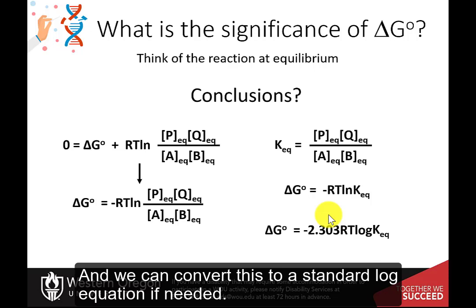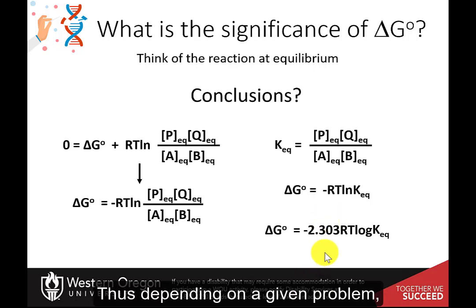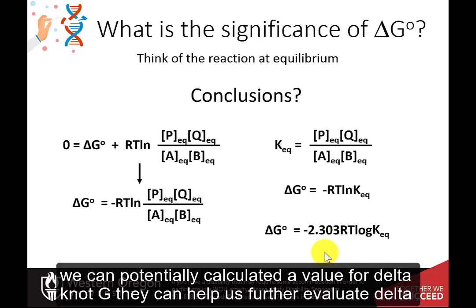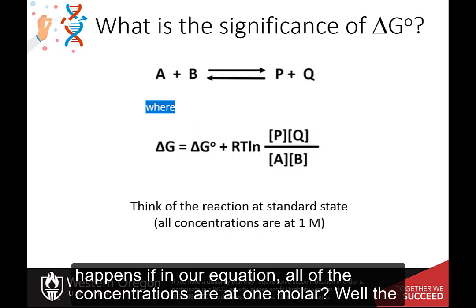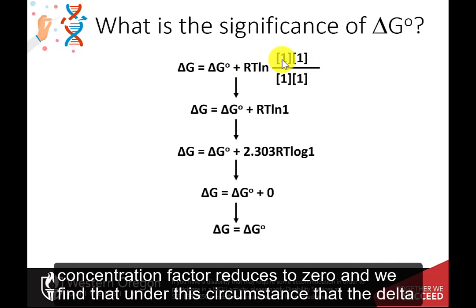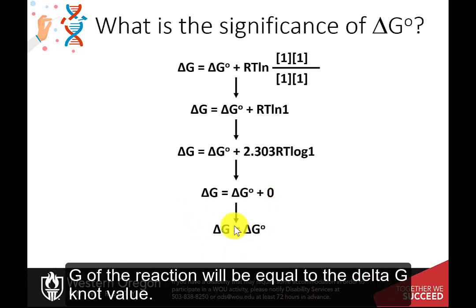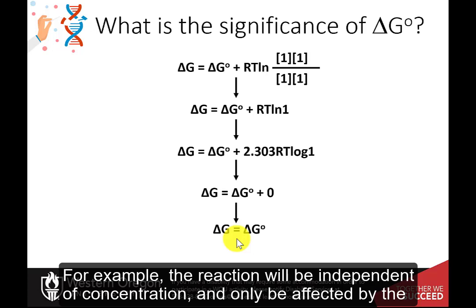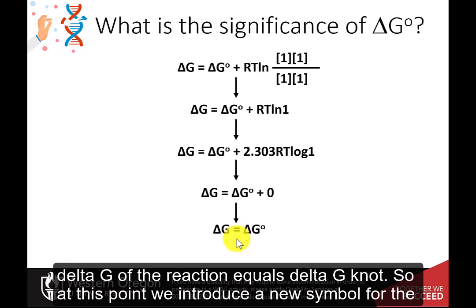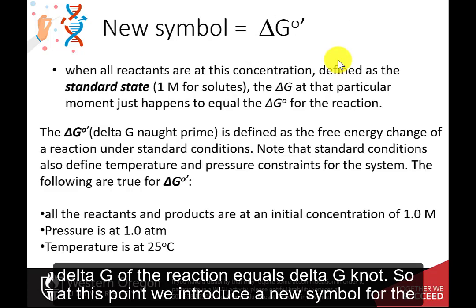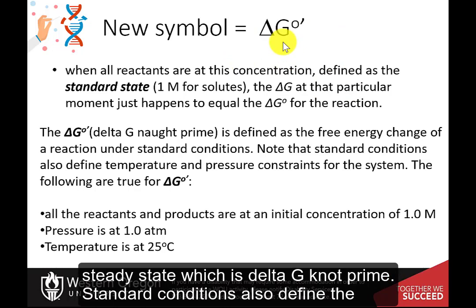We can convert this to a standard log equation if needed. Depending on a given problem, we can potentially calculate a value for delta G naught that helps us further evaluate delta G of a reaction under different conditions — for example, not at equilibrium. If all concentrations are at one molar, the concentration factor reduces to zero, and delta G of the reaction equals delta G naught. This is defined as the standard state. We introduce a new symbol for the standard state: delta G naught prime.